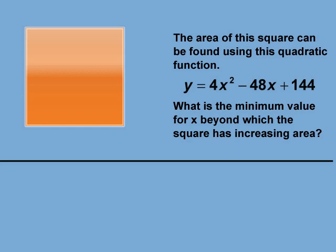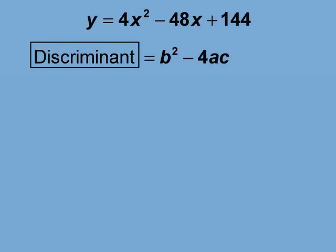One way to determine the number of roots for a quadratic is to calculate the discriminant, as shown here. The b value of negative 48 goes here, the a value of 4 goes here, and the c value of 144 goes here.